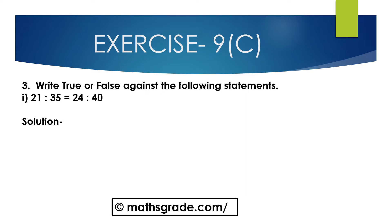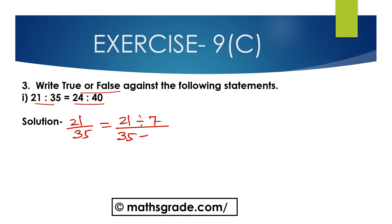We will solve question number 3: Write true or false against the following statements. First bit: 21 is to 35 is equal to 24 is to 40. We have to check whether these two ratios are equal or not. First, 21 is to 35 — that is 21 divided by 35. Between 21 and 35, 7 is the common factor. So divide the antecedent 21 by 7 and the consequent 35 by 7. 21 divided by 7 is 3, and 35 divided by 7 is 5. That is 3 is to 5.